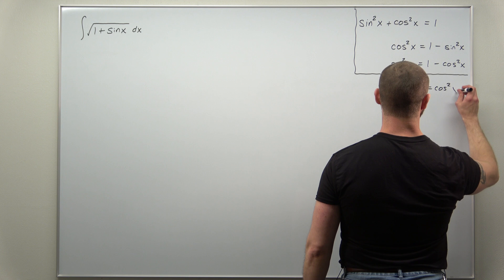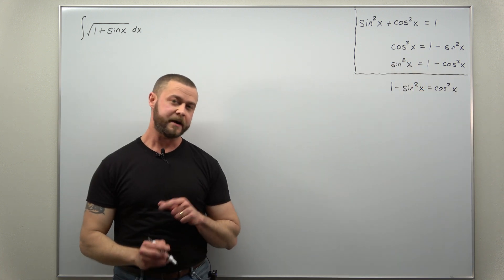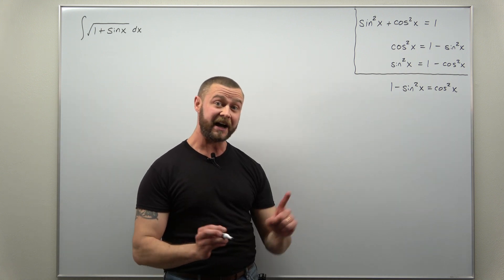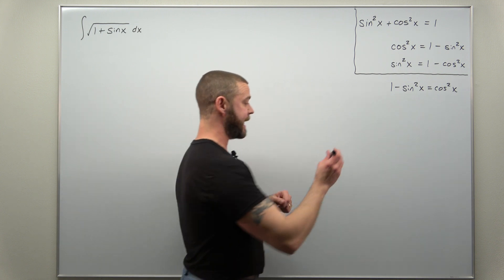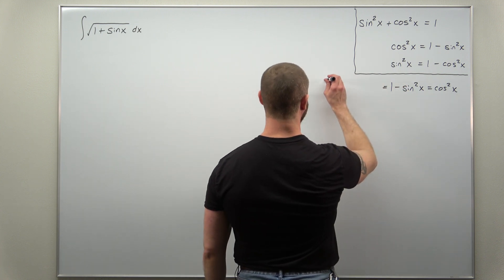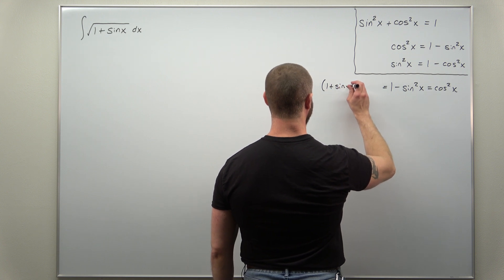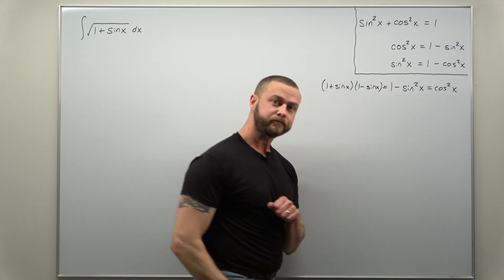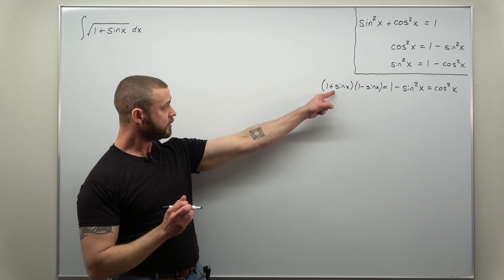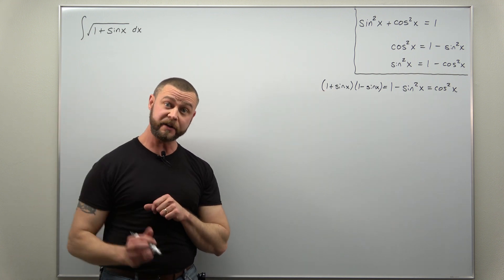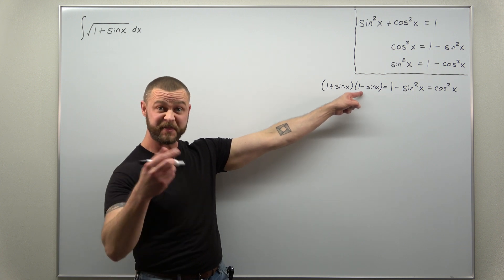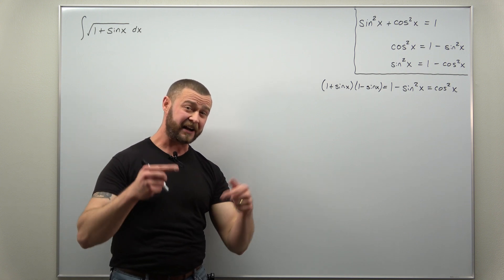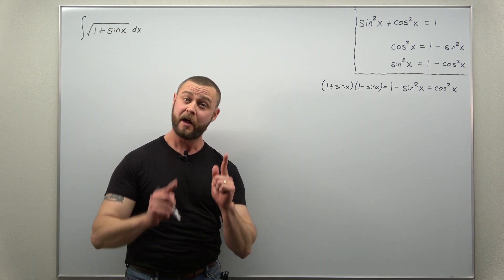Now, how do we get a one plus sine of x from this? Notice that left side — that's a difference of squares — so we can factor that as one plus sine of x times one minus sine of x. Notice that part, at least if we put a square root around it, looks like our integral. Now, the other part — we might be thinking the square root of one minus sine of x — we can't just put a factor of square root of one minus sine of x in there.